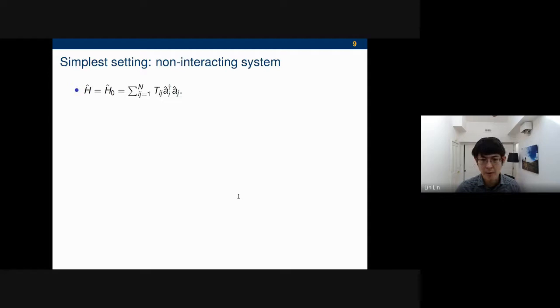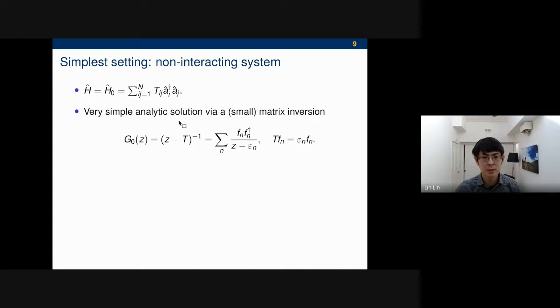Although this formulation looks really complicated, I want to say that for the non-interacting system, the problem can be miraculously simplified. If H only depends on the non-interacting part, so it's a quadratic Hamiltonian, then there's a very simple analytic solution. The Green's function is nothing but a matrix inverse or resolvent. You literally take this T matrix, Z minus T inverse, and then you're done. These F_n become the quasi-particle wave functions, which are nothing but the bona fide eigenfunctions of this Hamiltonian T. So these are what we call the bare horse or the bare Green's function.